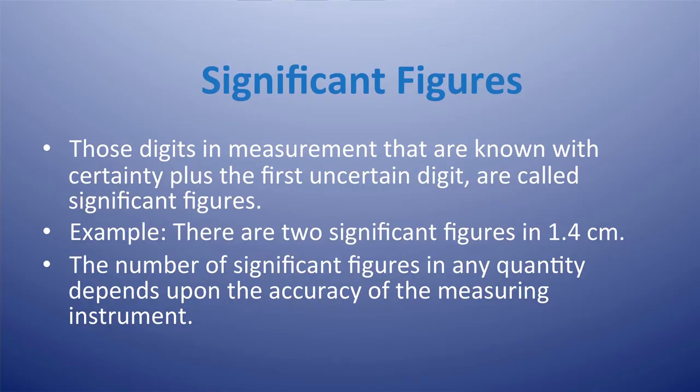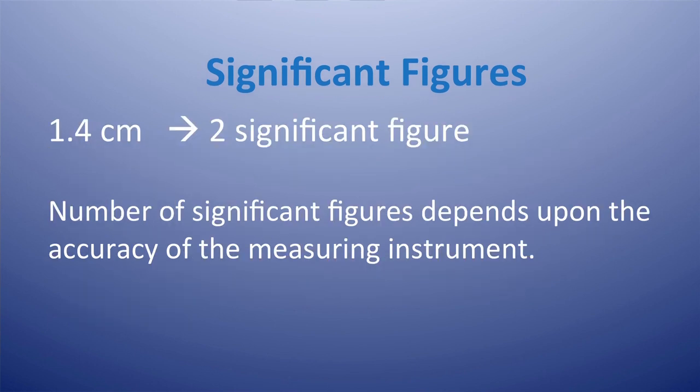Now, what are significant figures? Those digits in a measurement which are known with certainty plus the first uncertain digit are known as significant figures. For example, there are two significant figures in 1.4 centimeter. The number of significant figures in any quantity depends upon the accuracy of the measuring instrument.